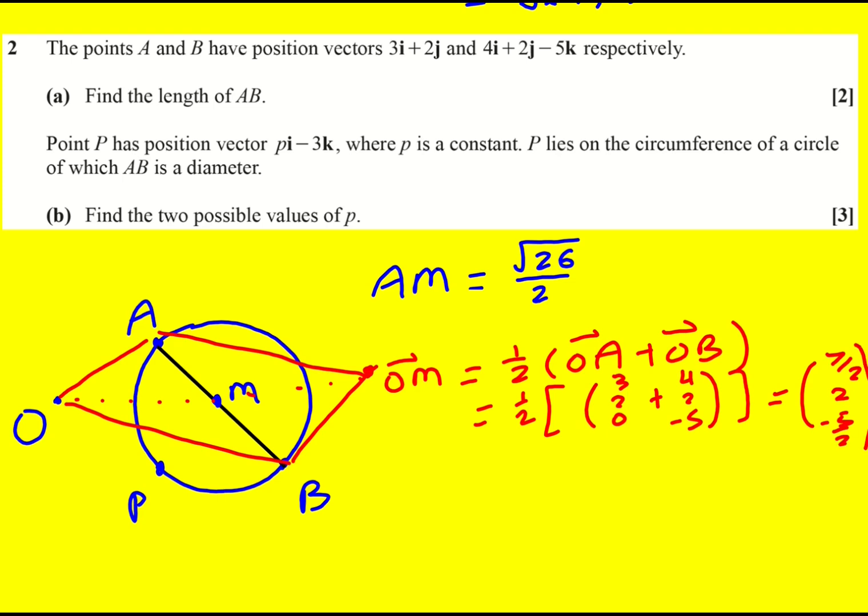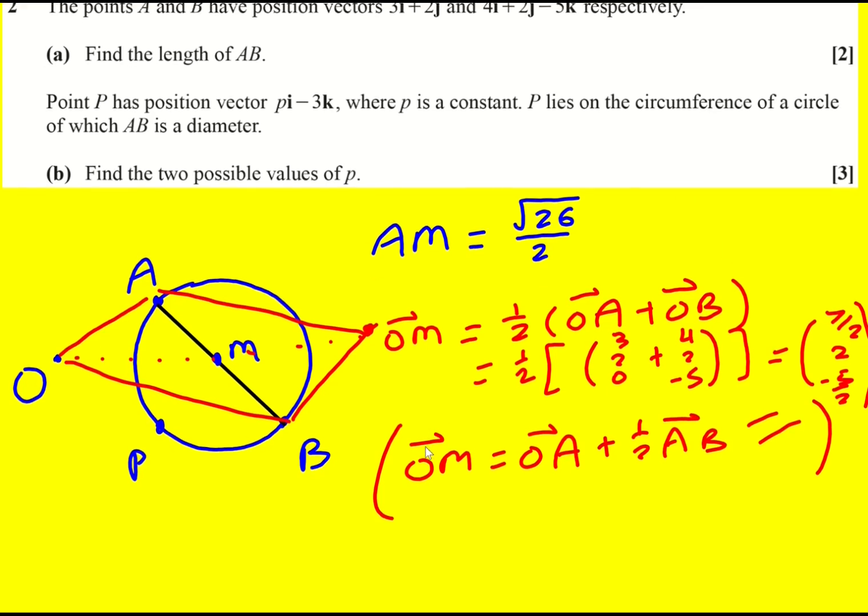By the way, if you don't know that, first of all, do learn it because it's really useful. And I've seen questions that basically require you to use it or have knowledge of it. If you're not aware of that, then you could always find out AB, which we already have. And then so OM, another way of getting from o to m would be doing OA plus a half AB. We know both of those, and it would give the same answer. I'm not going to go through that bit, but that's an alternative.